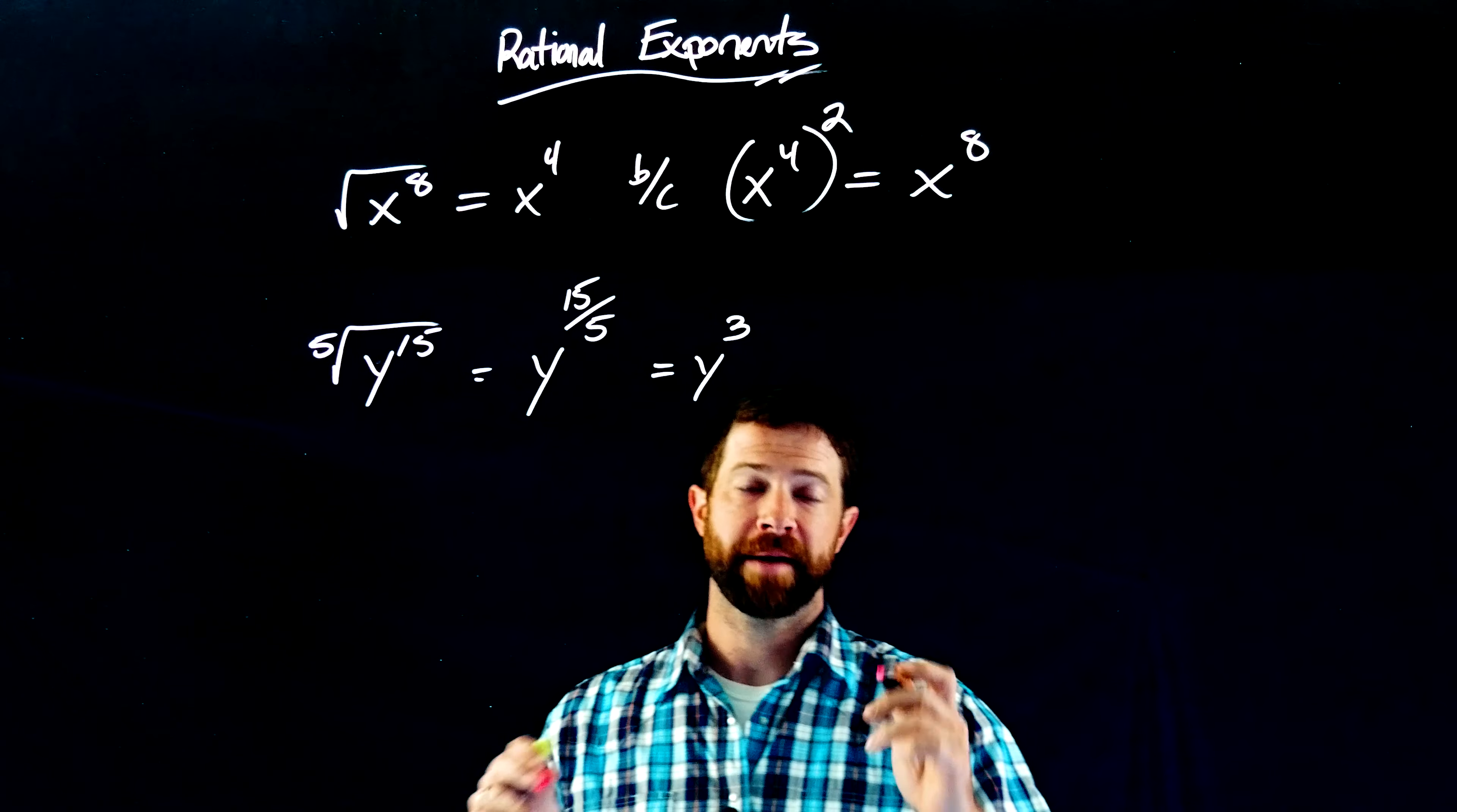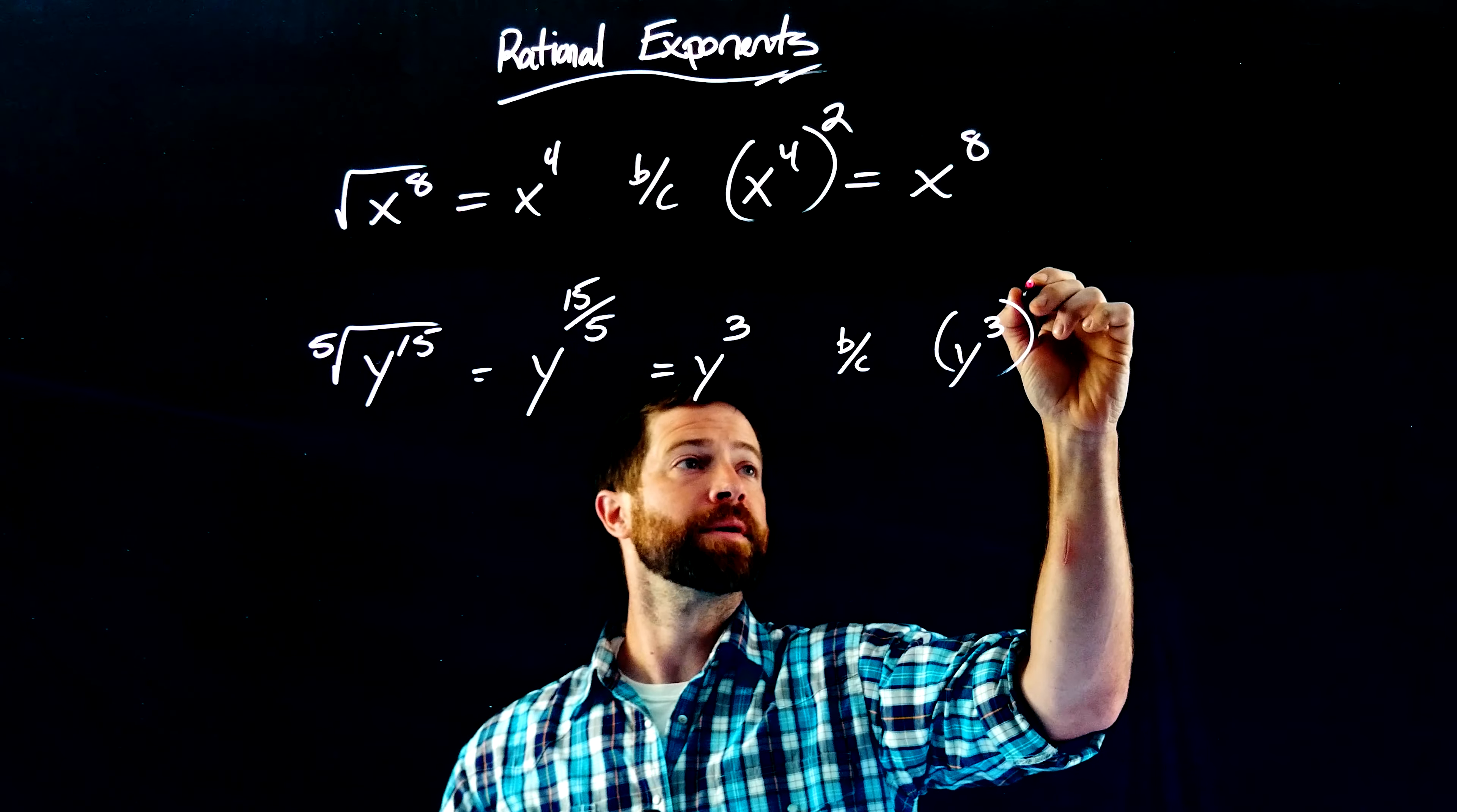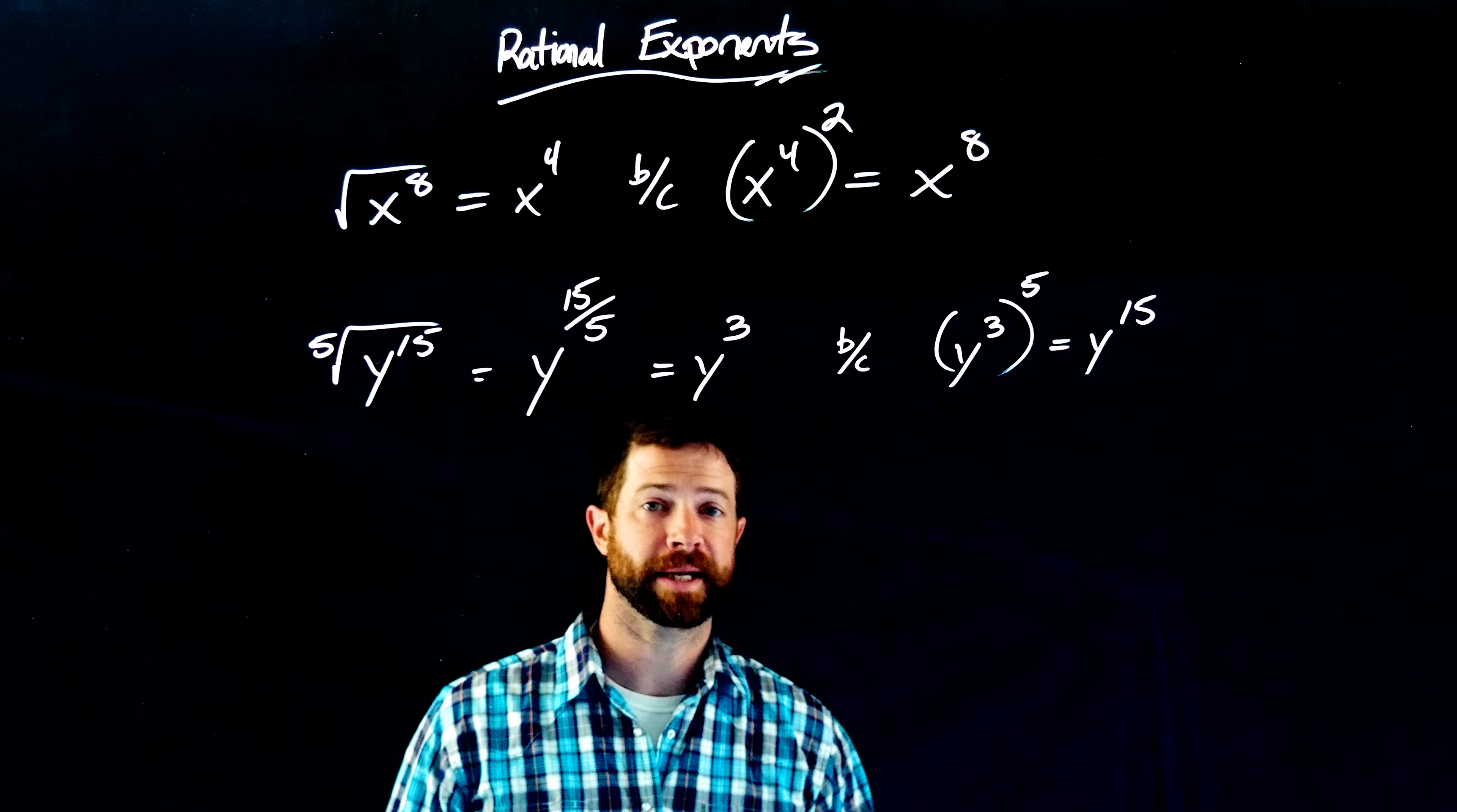And again, just to verify that fact, that's because if we take this y to the third and we raise it to the fifth power, we do, in fact, get y to the 15, because the power to power rule here says we'll multiply these two exponents together to simplify that expression.